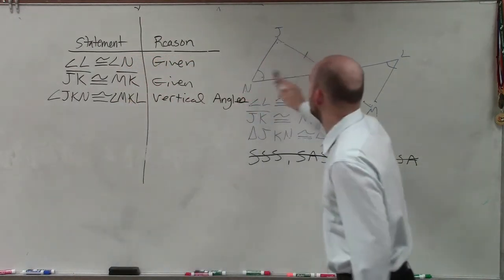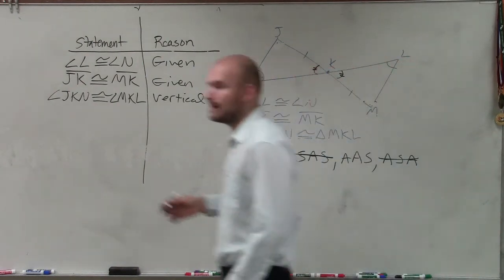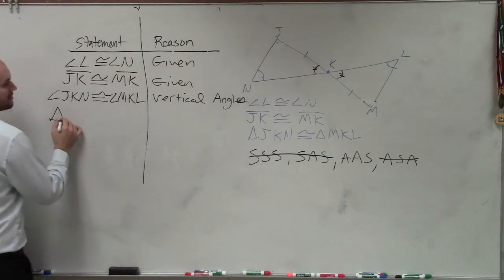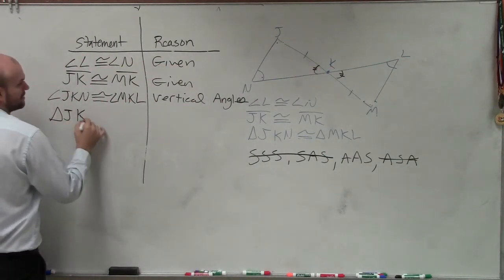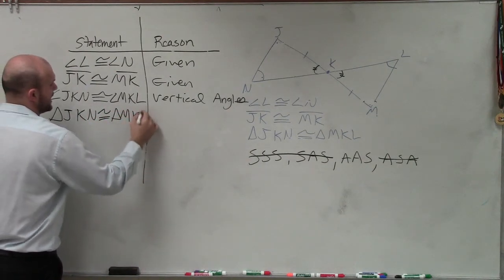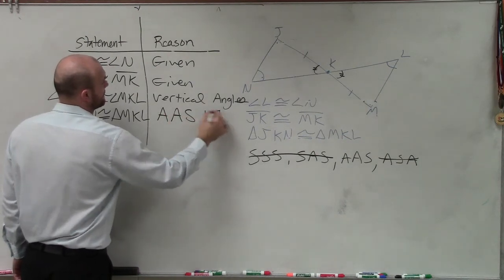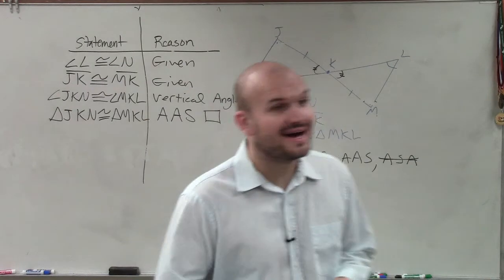So now, ladies and gentlemen, we have angle-angle-side. Angle-angle-side. So guess what? Now we can say that triangle JKN is congruent to triangle MKL because angle-angle-side. Ta-da!